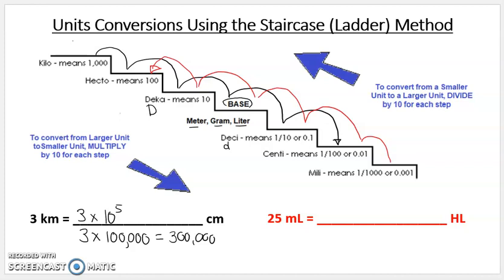So what this is going to be is 25 milliliters is five steps up, five steps up the staircase. So we're going to divide 25 milliliters by 10 to the fifth. Five steps, every step is dividing by a factor of 10. So that is equal to 25 over 100,000.